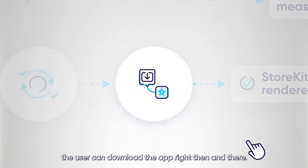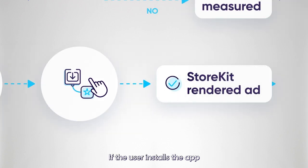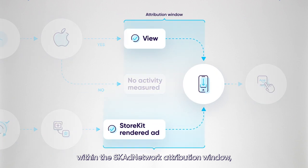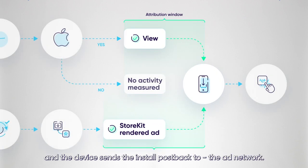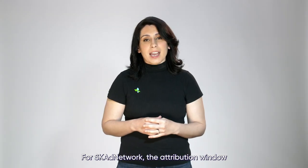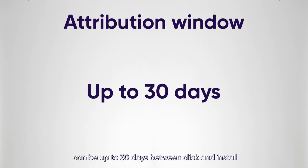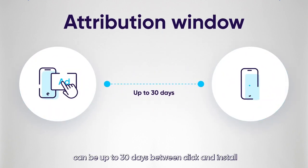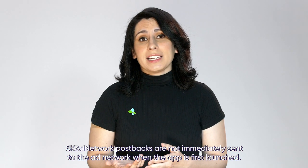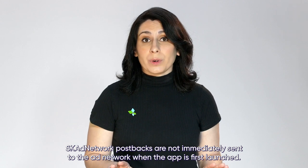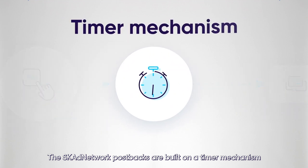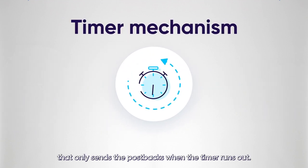In store kit rendered ads, the user can download the app right then and there. If the user installs the app and launches it within the SKAdNetwork attribution window, the install is attributed to the ad network, and the device sends the install postback to the ad network. For SKAdNetwork, the attribution window can be up to 30 days between click and install, depending on the ad type. Unlike standard postbacks, SKAdNetwork postbacks are not immediately sent to the ad network when the app is first launched. SKAdNetwork postbacks are built on a timer mechanism that only sends the postbacks when the timer runs out.